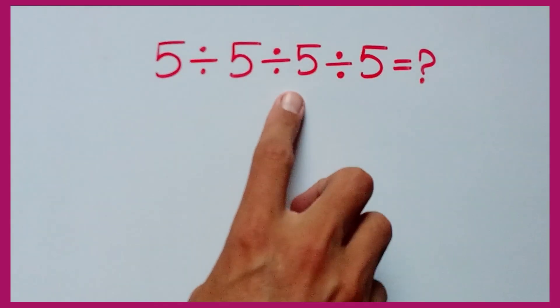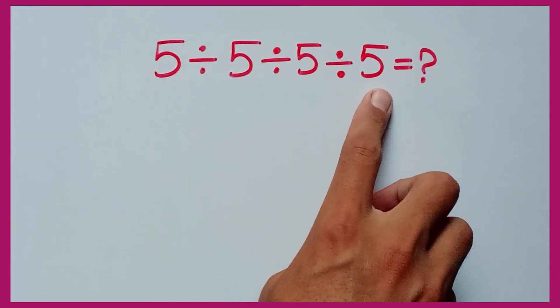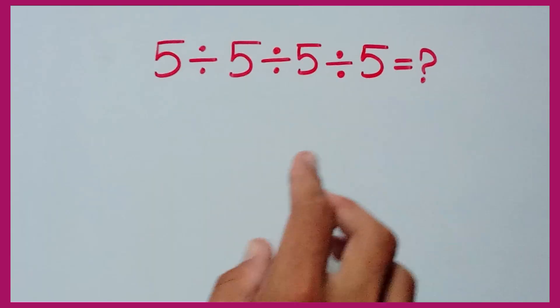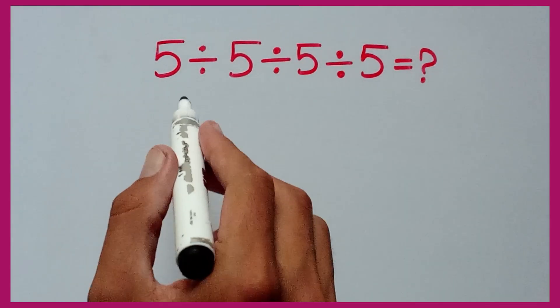5 divided by 5 divided by 5 divided by 5. Most people solve this question by the wrong method.